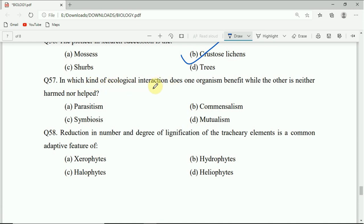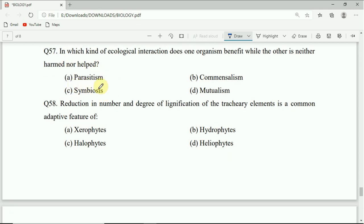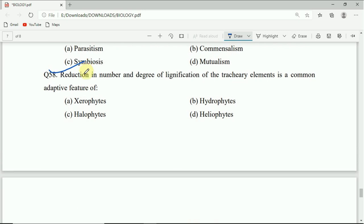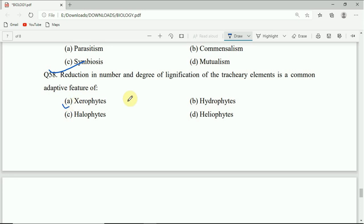Question 57: Options include commensalism, symbiosis, or mutualism. Correct answer will be C, that is symbiosis. Question 58: Reduction in number and degree of lignification of the tracheary elements is a common adaptive feature of xerophytes, hydrophytes, halophytes, or heliophytes. Right answer will be hydrophytes - reduction in number and degree is seen in hydrophytes.